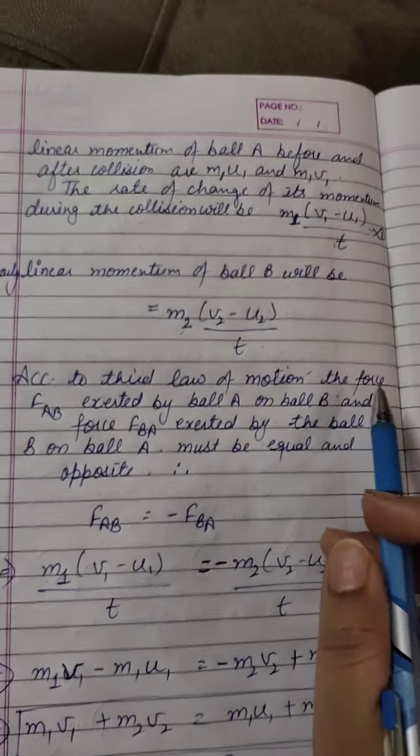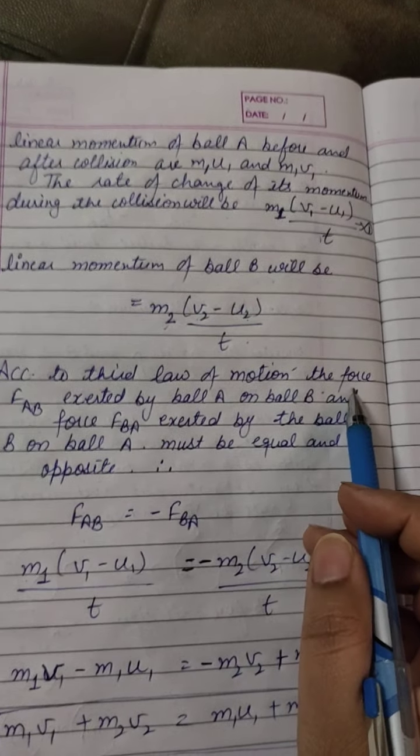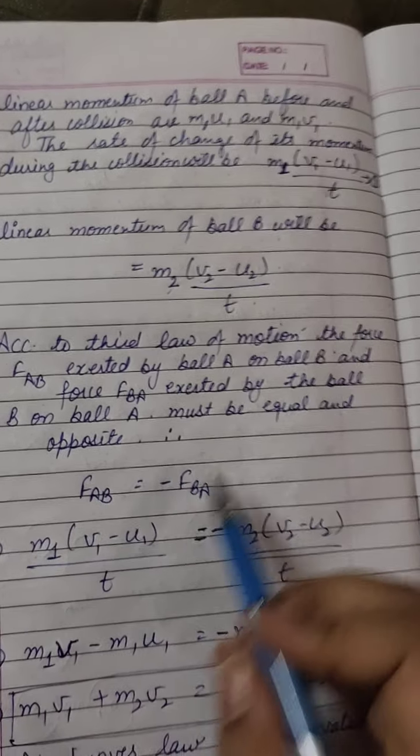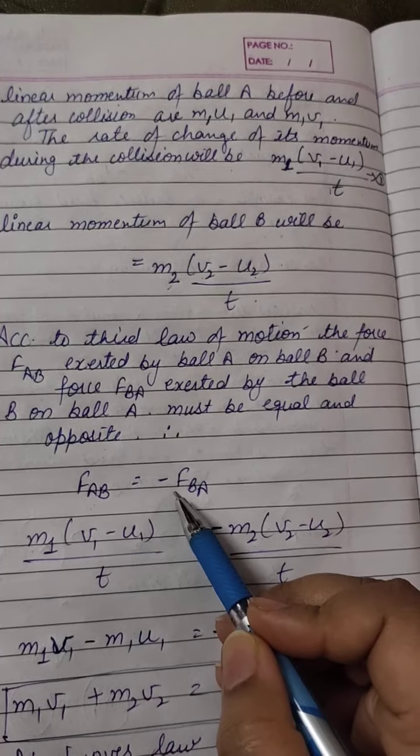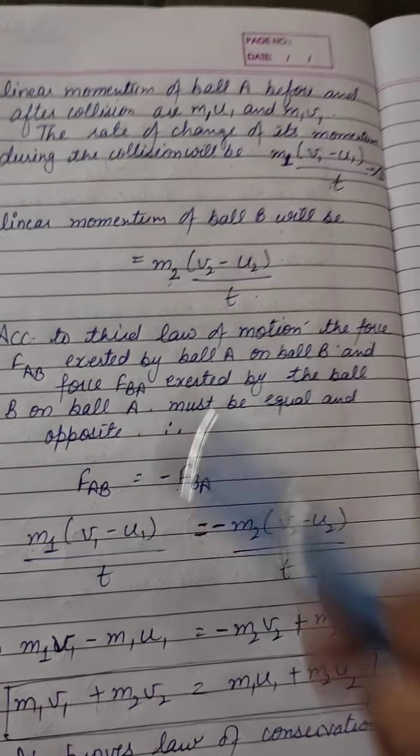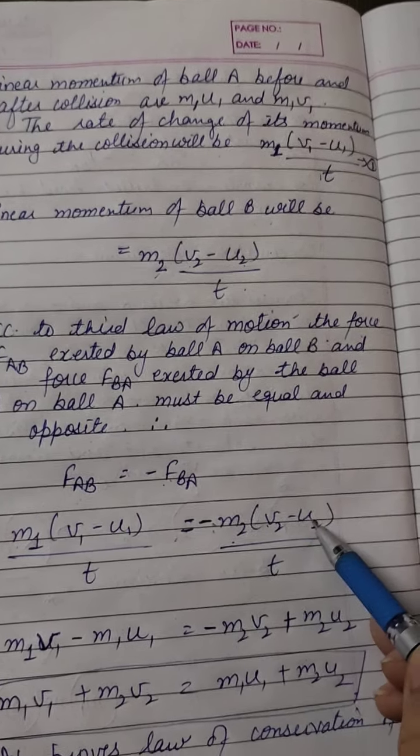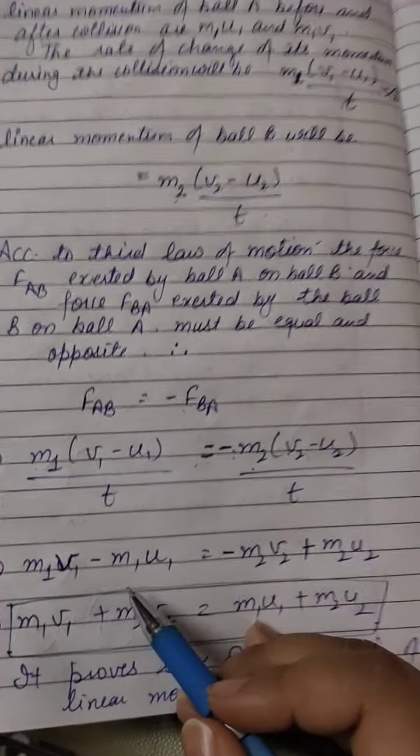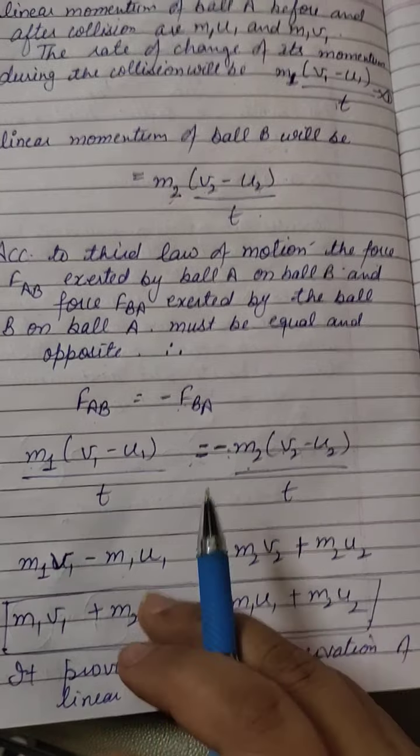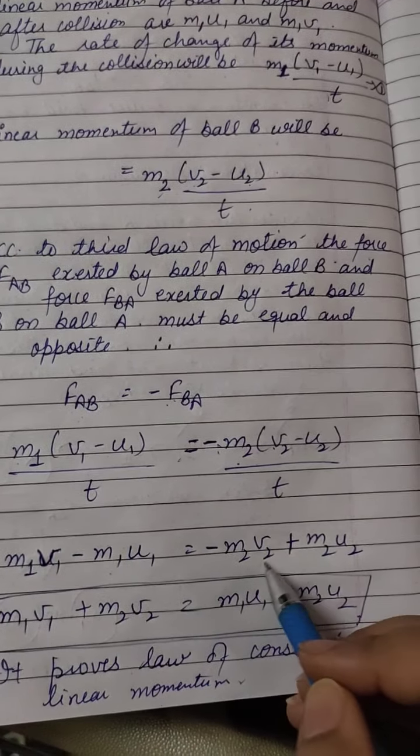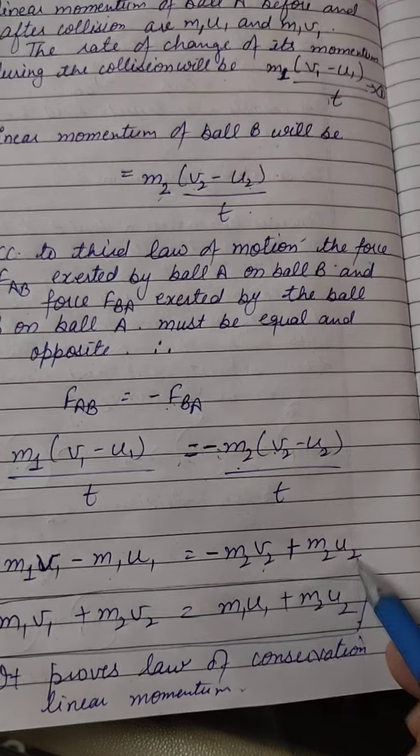According to third law of motion, both bodies exert forces on one another but in opposite direction. Therefore, FAB is equal to minus FBA. We will put values here. Because of the minus sign, this will be negative and this will be positive. So here, M1 V1 minus M1 U1 is equal to minus M2 V2 plus M2 U2.